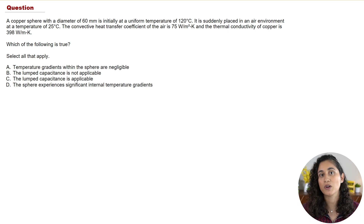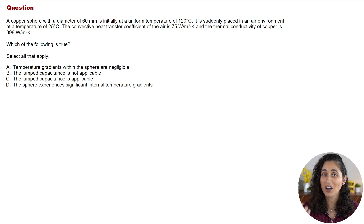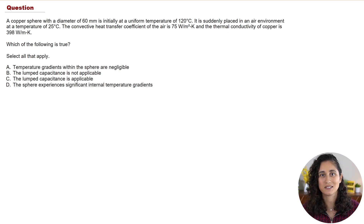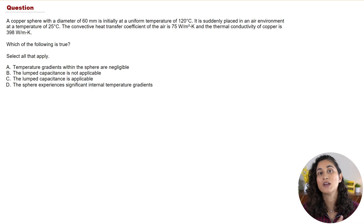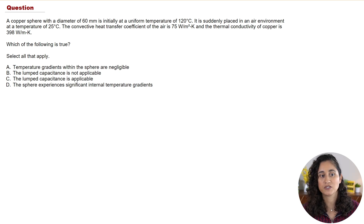During transient conduction, the temperature at any point within an object does not remain constant — it changes over time, and it can be very complex to solve. One method to simplify it is the lumped capacitance. However, we can only use lumped capacitance if the Biot number is less than 0.1. When the Biot number is less than 0.1, it indicates that the temperature variation within the object is small enough to be negligible.